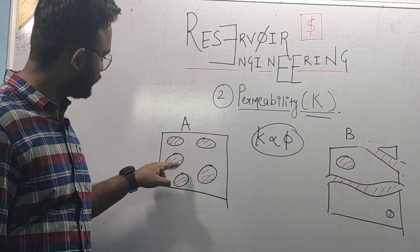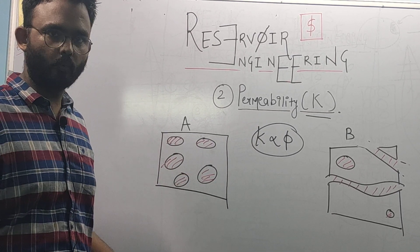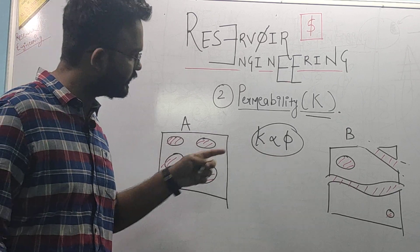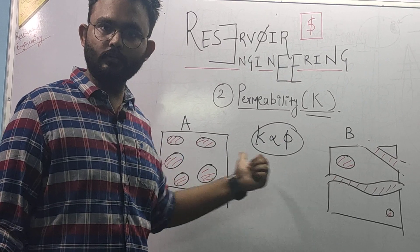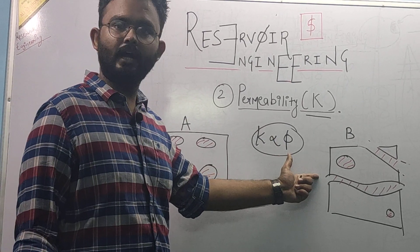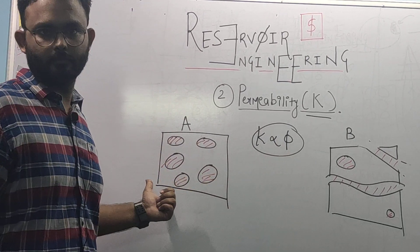So, this is rock A. It's very porous, you know, 1, 2, 3, 4, 5 pores. It's very porous but it's not permeable. Rock B maybe has lower porosity than rock A but rock B has higher permeability than rock A.